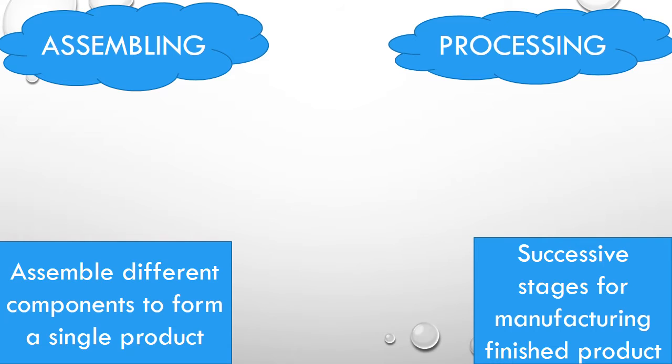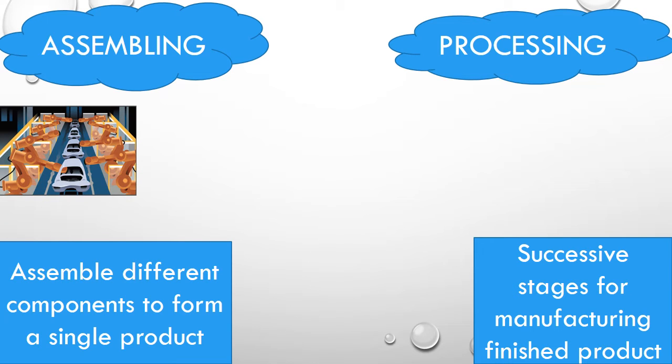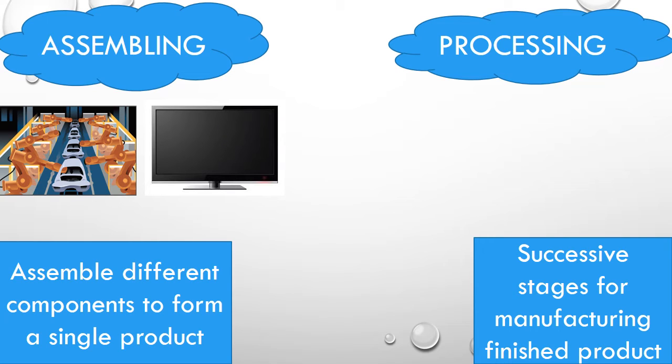So let's discuss assembling and processing industry first. Assembling industry, as the name suggests, requires assembling different components or different elements to make a particular product. For example, when we have to manufacture cars, bicycles, computers, or TVs. So what kind of industry will it be? It will be assembling industry.